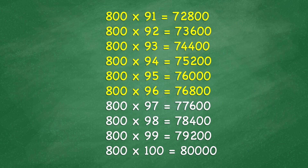800 times 97 equals 77,600. 800 times 98 equals 78,400. 800 times 99 equals 79,200. 800 times 100 equals 80,000.